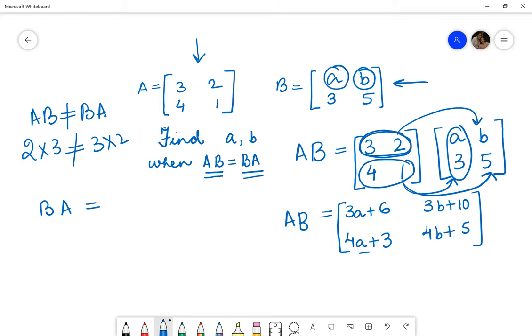So BA will be written as A, B, 3, 5 multiplied by 3, 2, 4, 1.